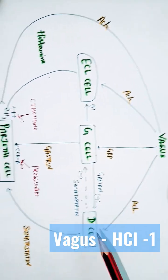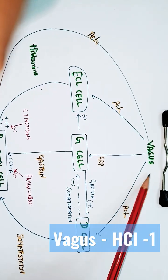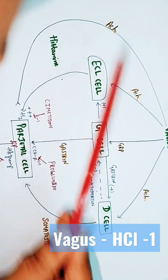Role of vagus nerve in stimulating HCL production. Vagus has a direct action on parietal cell. The first one.